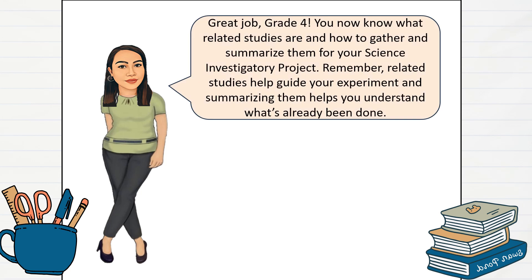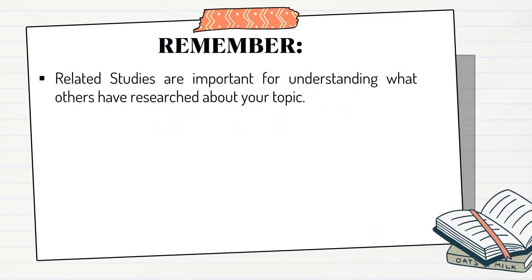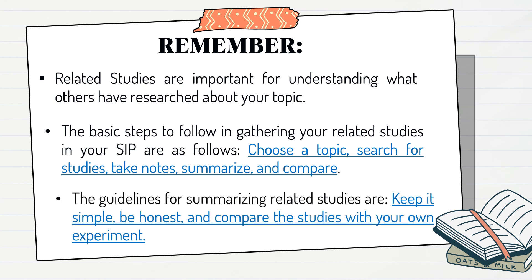Great job, grade four. You now know what related studies are and how to gather and summarize them for your science investigatory project. Remember, related studies help guide your experiment, and summarizing them helps you understand what's already been done. Let's recap. Related studies are important for understanding what others have researched about your topic. The basic steps are: choose a topic, search for studies, take notes, summarize, and compare. The guidelines for summarizing are: keep it simple, be honest, and compare the studies with your own experiment.